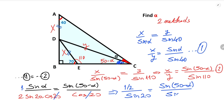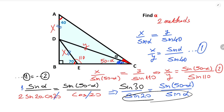We can write it like this. So 1 over 2 can be written as sine 30. Therefore you can see easily that alpha equals 20 degrees.